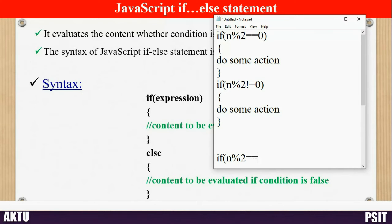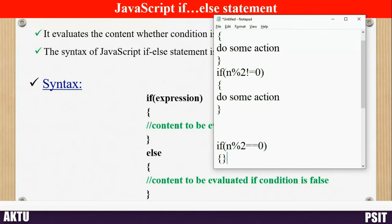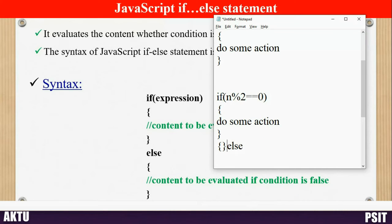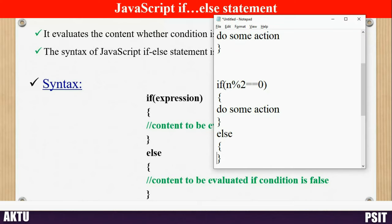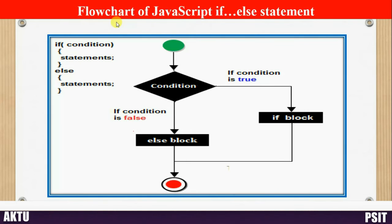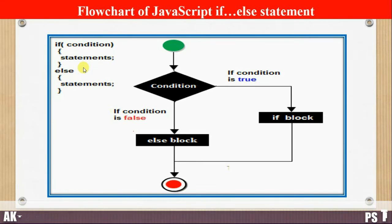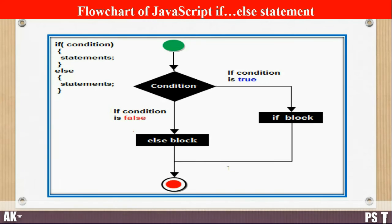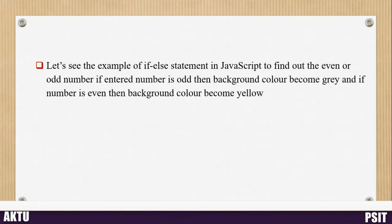So how do we structure this code? If the number is even, perform some action inside the if block. If the number is not even, define the alternative action inside the else block. Looking at the flowchart of the if-else statement: control first checks the condition; if true, the if block executes; if false, the else block executes. In an if-else block, at a time only one block will be executed.